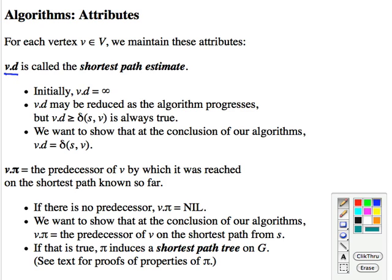First of all, we got v.d is the shortest path estimate, the current distance estimate. So initially, we estimate it to be infinity. And we reduce it as we find shorter ways to get to the vertex. You may have from s, you may find some path that gets you to v at some cost C. And then you may later on find some other path that gets you at some cost D less than C, and then you update the cost. So that's how that works.